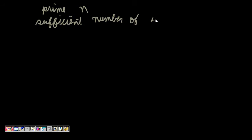What we will do is, let's say we are given a number, prime number n. To test if it is prime, what we will take is, we will take sufficient number of integers a, which is less than n. And what we will do now?